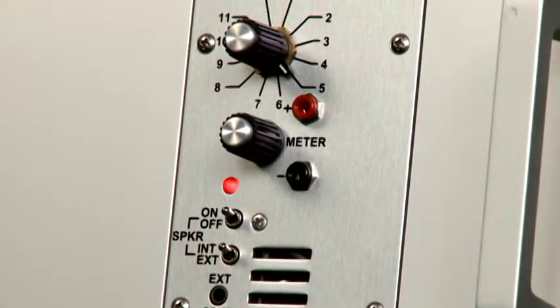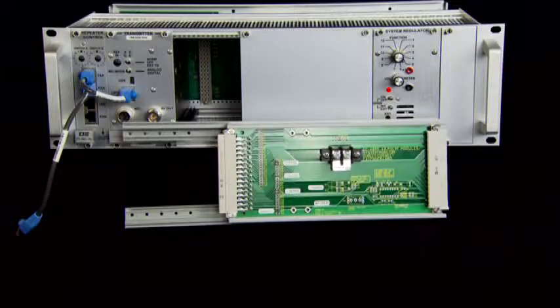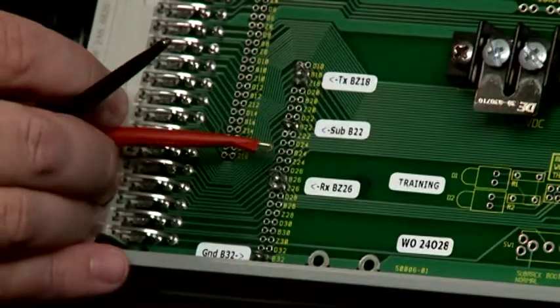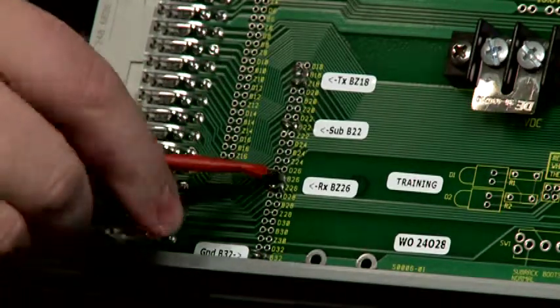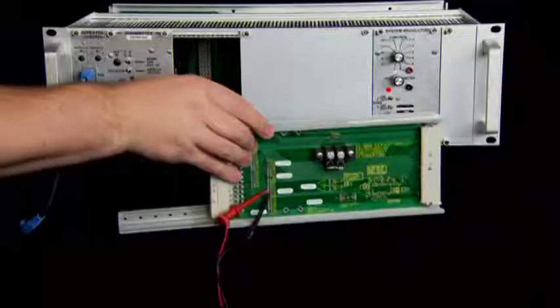The audio connection can be made to the meter jacks on the front of the system regulator or connect an audio connector to pins B26 and Z26 on the extender card. You may need to add test points to the solder holes attached to these pins for an easy connection.